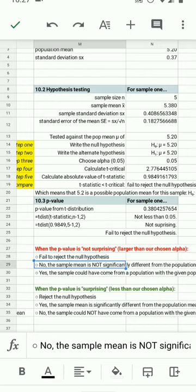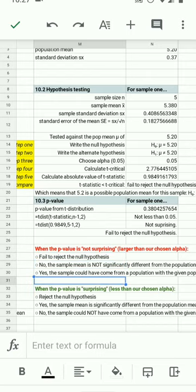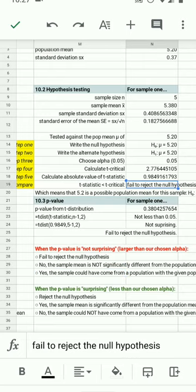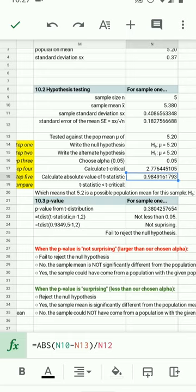No, the sample mean is not significantly different from the population. Yes, the sample could have come from the population. So this produces the same answer we had before. It's simply a third way to get to that answer. And in this case, we do have to calculate the t-statistic to get to that answer.